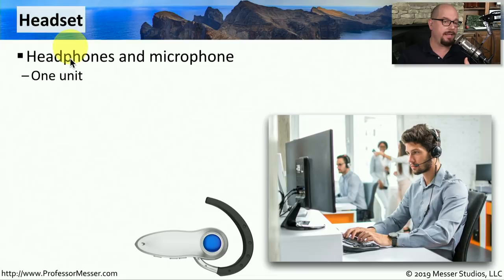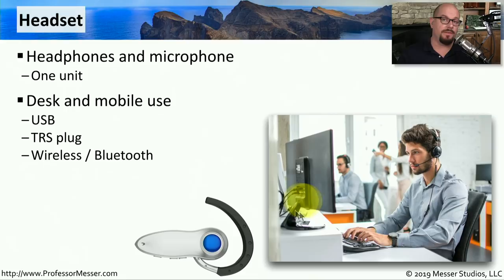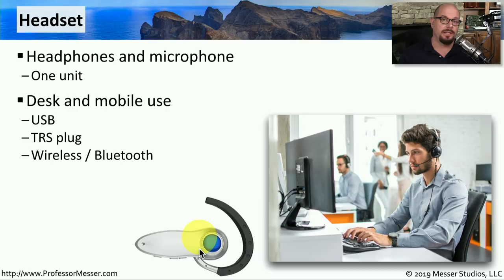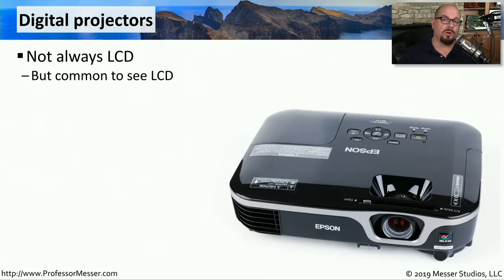If you want to combine both a headphone and a microphone in the same unit, then you want a headset. These headsets can be used for desktop use or on mobile devices. They often connect over USB, or there might be multiple TRS plugs — one for the headset and the other for the microphone. Or they may connect over Bluetooth, which is very common for mobile devices. This allows you to be hands-free while listening through the headphones and talking through the microphone — great if you need access to the keyboard while on the phone or communicating during a game.